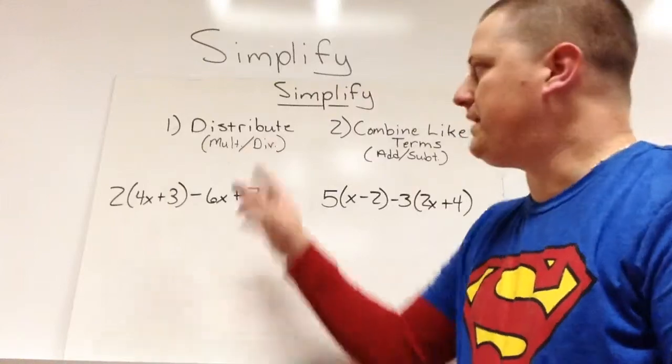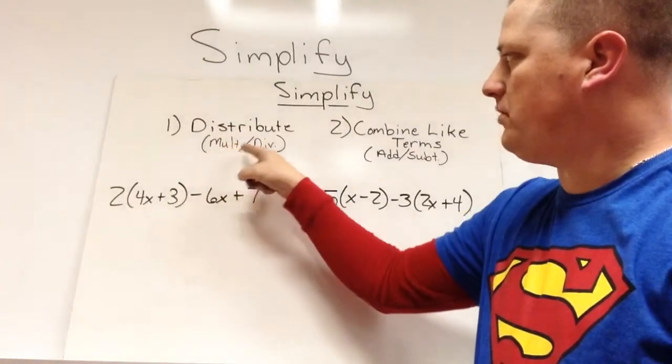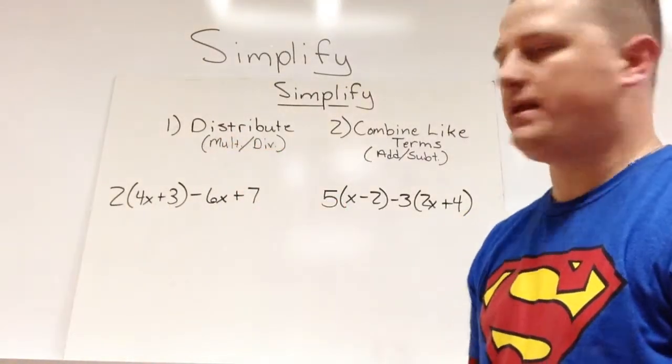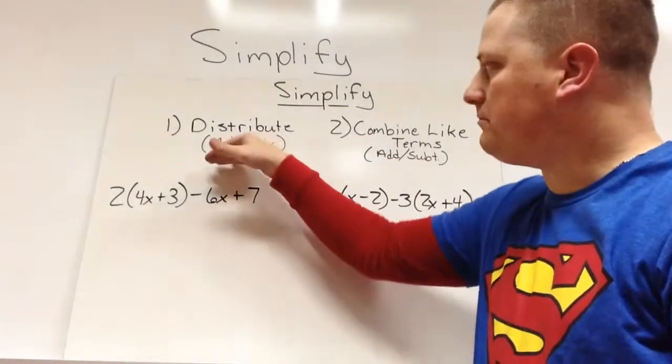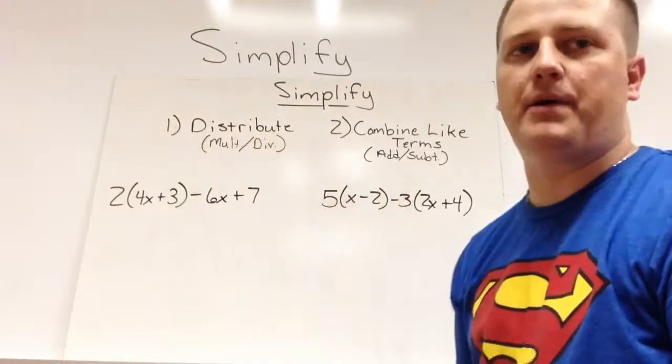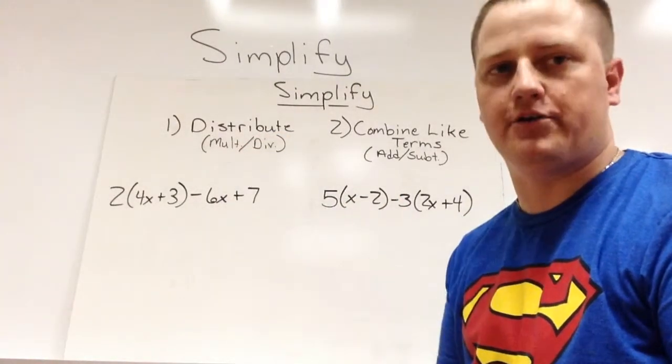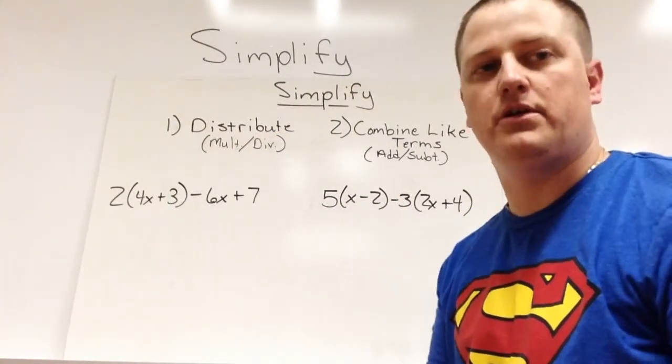We always distribute first because distributing is a form of multiplication and division. Combining like terms is a form of adding and subtracting. And we always multiply or divide before we add or subtract. Understanding the order of operations, we should get that.